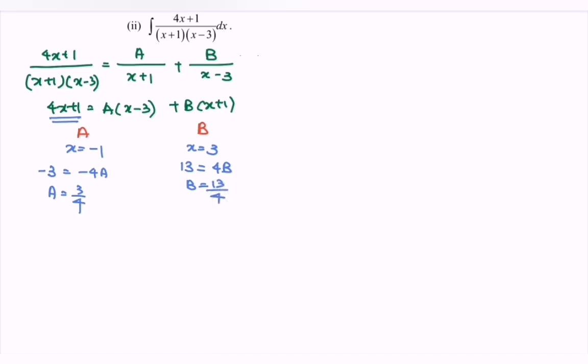So rewrite the situation. We have 4x plus 1 over, we have x plus 1 multiplied with x minus 3, and we will have 3 over 4 bracket, x plus 1, plus we have 13 over 4 bracket, x minus 3.